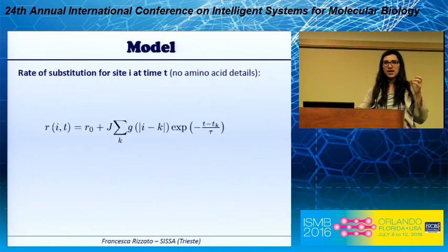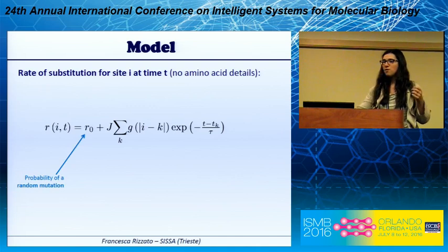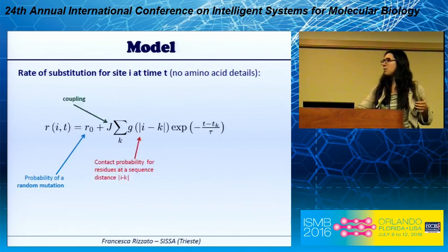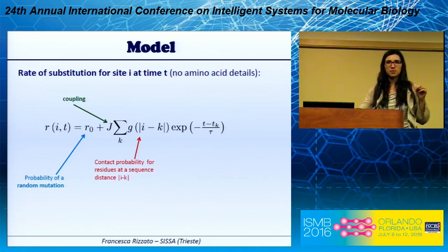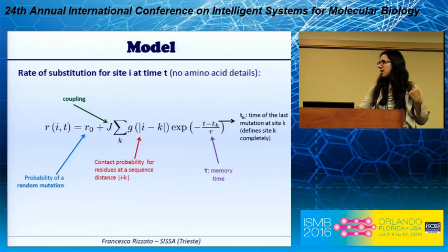With this in mind, we decided to model the rate of a site of a protein with a formula that depends on two terms. First, we have a probability of random mutation which is the same for all sites at all times. Then we add a coupling that depends on a sort of contact probability on an average structure between two sites, and then we have the exponential decay in time that I was describing.